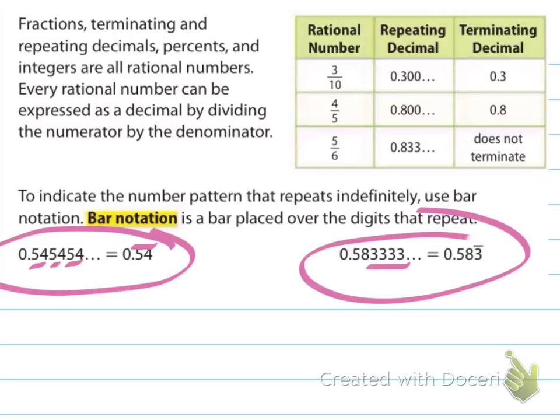The bar is not over the 583, because it's not 583 repeating — it's 0.58333333... So just remember that you're only putting the bar over the repeating digits so that it represents the right thing.